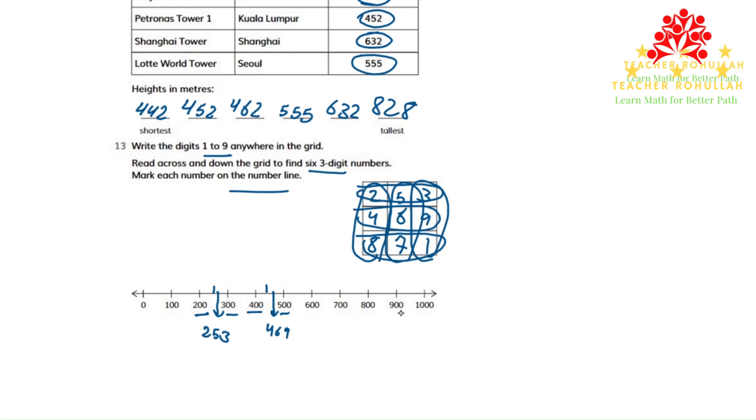The third number across is 871. 871 is between 800 and 900. So again, the number halfway between them is 850.